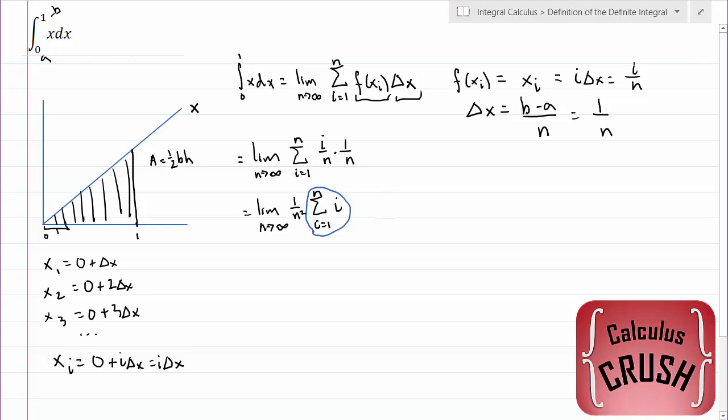This expression here has a handy little formula, which we're not going to derive in this video. But it's something worth remembering, that if you add up i, n of them, so this would be 1 plus 2 plus 3 plus 4 plus 5, the formula for that is n times n plus 1 over 2.